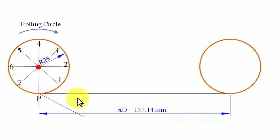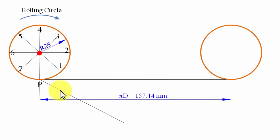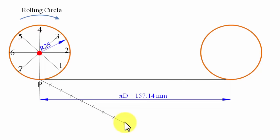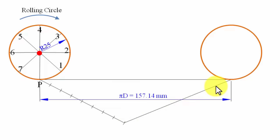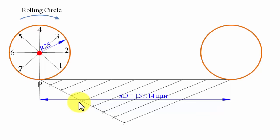To divide the baseline into 8 equal parts, draw a line at any suitable angle from one end. Mark points 1 centimeter apart along this auxiliary line — you need 8 arcs of 1 cm radius each. Join the 8th point to the far end of the baseline. Then, using a mini drafter aligned to this auxiliary line, draw parallel lines through each of the 7 intermediate points. This divides the 157 mm baseline into 8 equal parts.